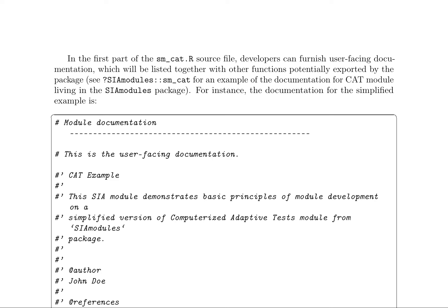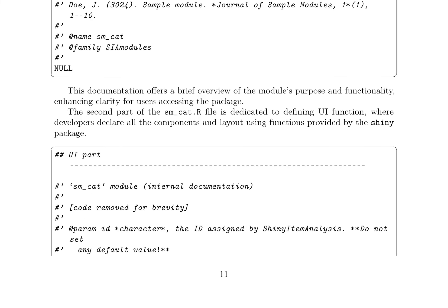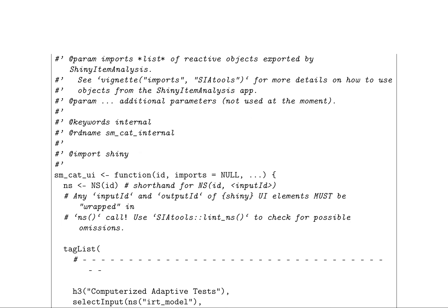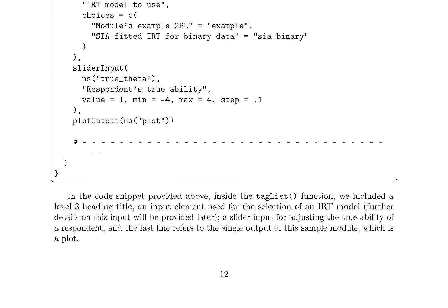The research paper discusses the development of a computerized adaptive tests module, focusing on the user-facing documentation and the UI function definition in the sm_CAT.R source file. The documentation provides an overview of the module's purpose and functionality. The UI part is dedicated to defining components and layout using functions from the Shiny package, including a level 3 heading, an input element for selecting an IRT model, a slider input for adjusting the true ability of a respondent, and a plot output. The code snippet showcases the implementation of these components, emphasizing the importance of using the NS function to wrap UI elements.